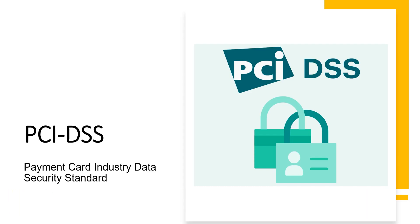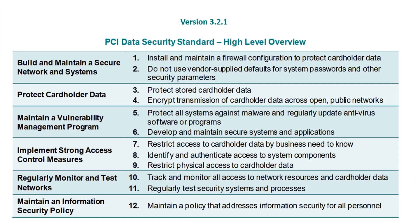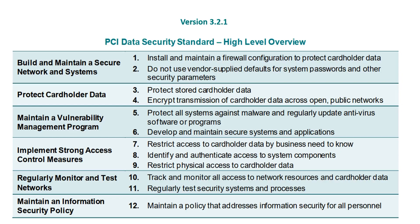Now let's talk about the requirements. This is going to be a high-level overview of the 12 PCI DSS requirements. There are six main domains or milestones, and within those six domains there are 12 requirements. Each requirement has a number of sub-requirements — that's the structure of the PCI DSS. We'll review it at a high level: first version 3.2.1, and then version 4.